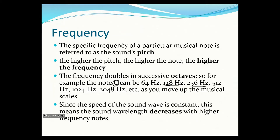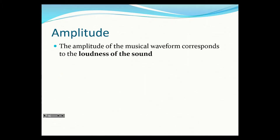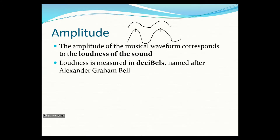Since the speed of sound is constant, as frequency increases the wavelength decreases — we know V equals lambda times F, so higher pitch means smaller wavelength. Amplitude represents the loudness of sound: a wave with bigger amplitude is louder even if it has the same frequency and wavelength. We measure loudness in decibels, named after Alexander Graham Bell.